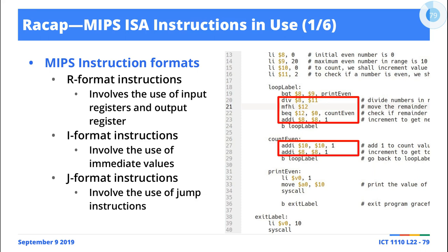Just to recap what we've done here: we started a discussion on the different types of instructions. Fundamentally, MIPS has three types of instructions: R-format,